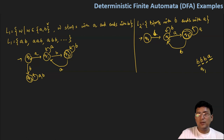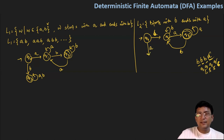So the first B moves us to Q5. The second B also moves us to Q5. The third B also moves us to Q5. But when we get an A symbol, that will move us not to Q5 but to Q6. And with A, I will move to the Q6 state, which is the final state. Now if I get A in the starting itself, so that will not be acceptable. I will move to let's say the Q7 state, which is the dead state. And in the dead state, if I get A or B, I should remain in the dead state itself.